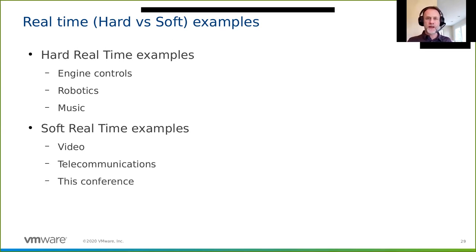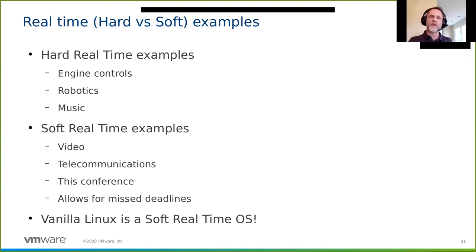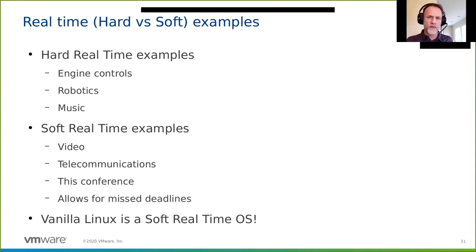This conference is soft real-time—things glitched throughout the week, which was annoying, but didn't fail the system. You can continue; there are workarounds. Linux without the real-time patch is a soft real-time system. In fact, it's become a very high-quality soft real-time system because of the work of the PREEMPT_RT patch going into Linux over the last decade. Many recording people now say vanilla Linux works well enough that they don't even need the PREEMPT_RT patch.